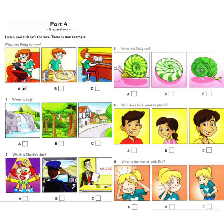1. Where is Lily? Where's Lily? Do you know? She went for a walk by the waterfall, I think, Mum. Oh, here's a text from her. She's in the village. Who's she with? Her new friend who lives near the forest.